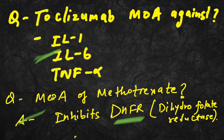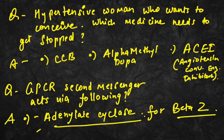For a hypertensive woman who wants to conceive, which medicines need to be stopped? The answer is calcium channel blockers, alpha methyldopa, and ACEi (angiotensin-converting enzyme inhibitors). These are the drugs that need to be stopped in this condition.